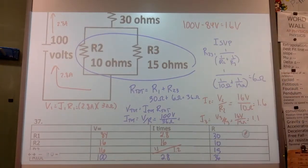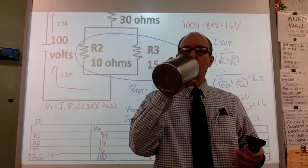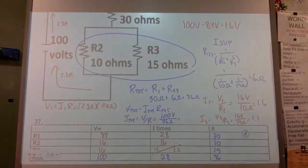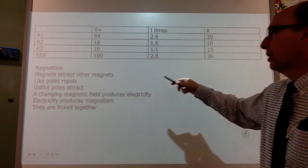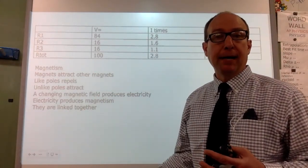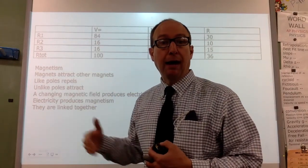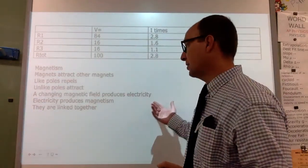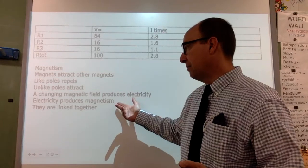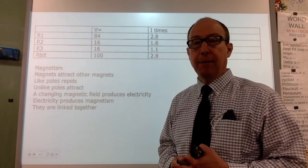If I use the unrounded value of 2.777 repeating, both methods give the same result. That's the end of the study guide. There are also conceptual questions on magnetism: something that attracts a magnet is also a magnet; like poles repel, unlike poles attract; a changing magnetic field produces electricity; and electricity produces magnetism — they're two parts of the same universal force. Good luck on the final exam and thank you for taking physics.